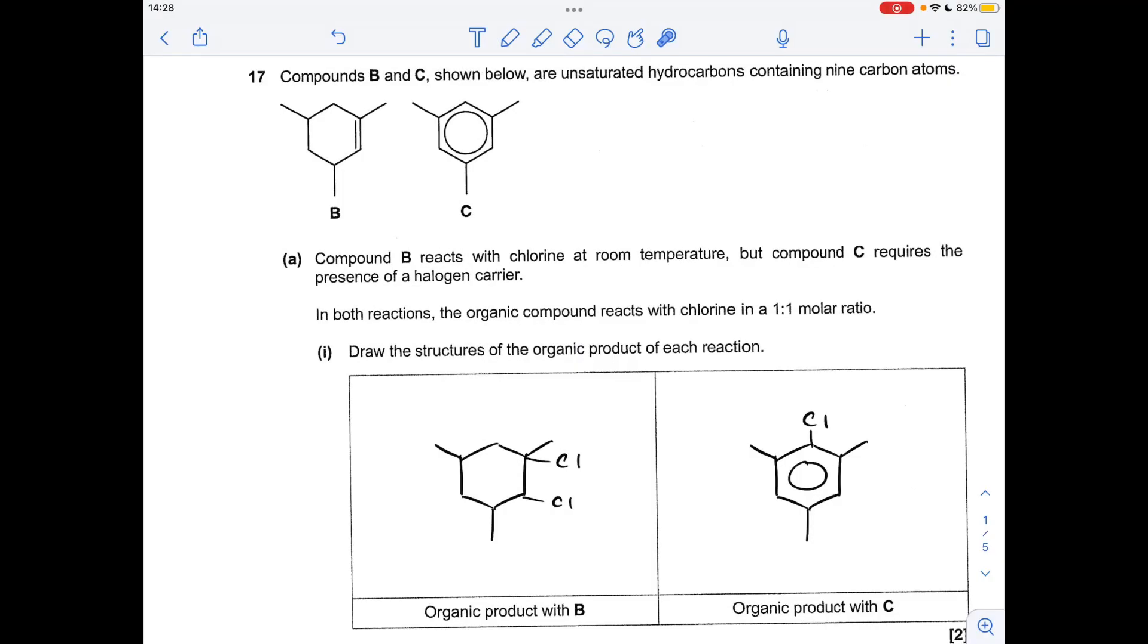Okay, so make a start. Compound B reacts with chlorine to produce this compound here. Basically the double bond opens up, the pi bond breaks, and the chlorine atoms from the Cl2 molecule add across the bond. Whereas in compound C we've got a substitution reaction taking place where one of the hydrogens substitutes for a chlorine.